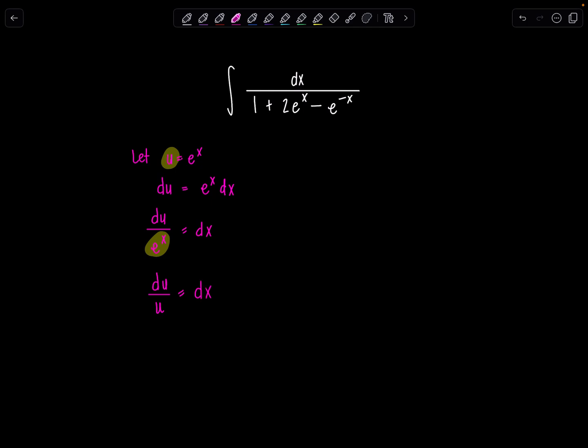And then we should be pretty much almost ready to rewrite the whole integral in terms of u. Only thing I want to remind you is that right here, this e to the negative x, that's 1 over e to the x. So that'll come in useful when we're rewriting things. In fact, if you just need a moment, we can rewrite this so you can see it super clearly. 1 plus 2 e to the x minus 1 over e to the x.